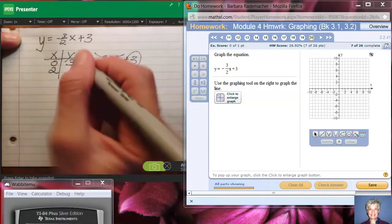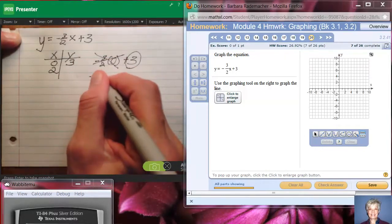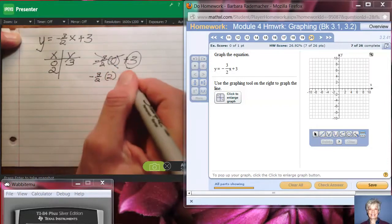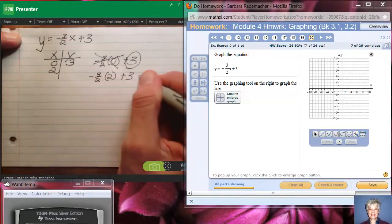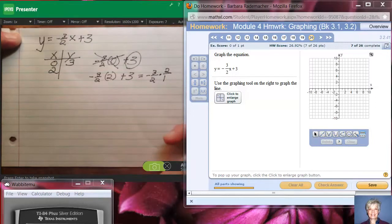Now, what if I say -3/2 times 2 plus 3? Well, that's exactly the same thing as -3/2 times 2/1, right? 2/1 and 2 are exactly the same number.